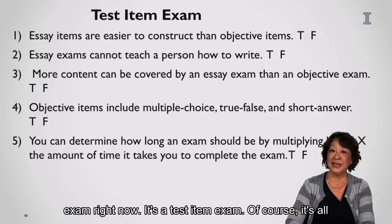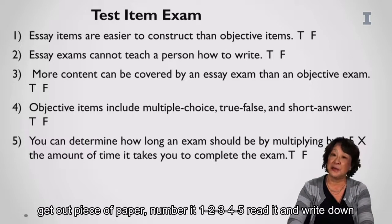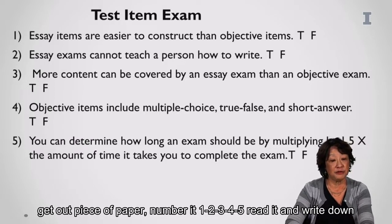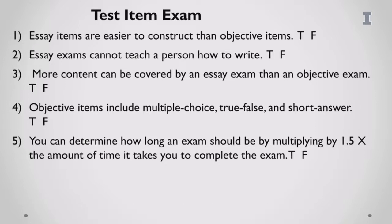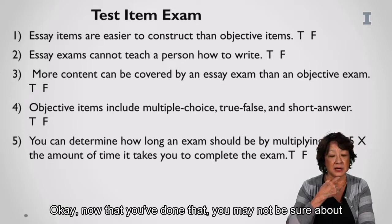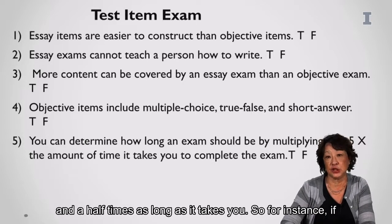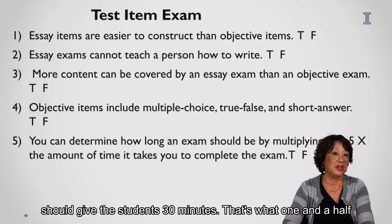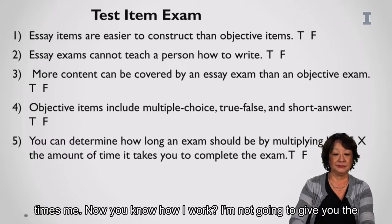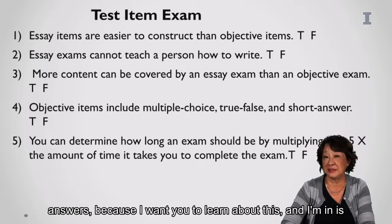I'm going to give you an exam right now — a test item exam. It's anonymous, but you will know. Get out a piece of paper, number it one through five, and write either T for true or F for false. You may not be sure about number five: the X means time — one and a half times as long as it takes you. For instance, if it takes you 20 minutes, you should give students 30 minutes. I'm not going to give you the answers just yet — I want you to learn, and I'll test you at the end.